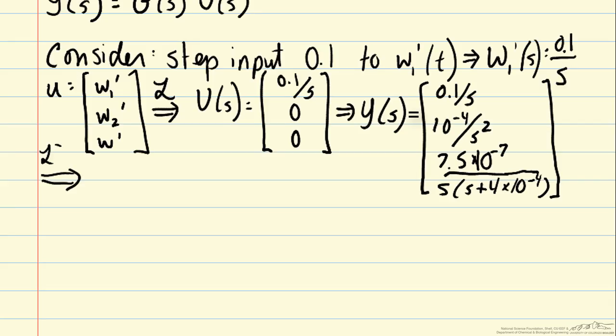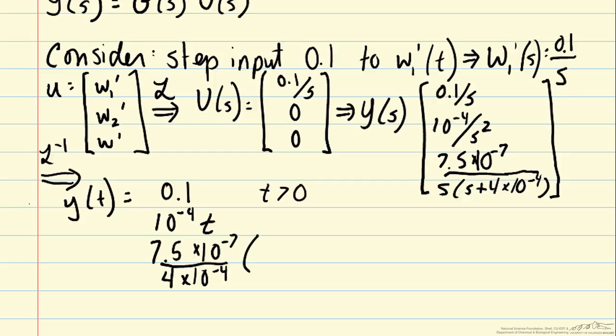Now that we've solved for Y(s), we can take the inverse Laplace transform to solve for y(t). The inverse Laplace transform of that step is just 0.1, the constant for t greater than 0. The second term is 10 to the minus 4 times t. And finally, we have 7.5 times 10 to the minus 7 divided by 4 times 10 to the minus 4 times (1 minus e to the t times 4 times 10 to the minus 4). In an earlier video, we wrote this as t over 2500 and viewed that as the time constant. Either one is equally applicable.